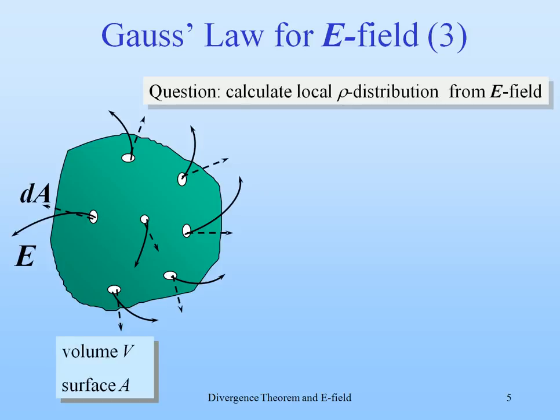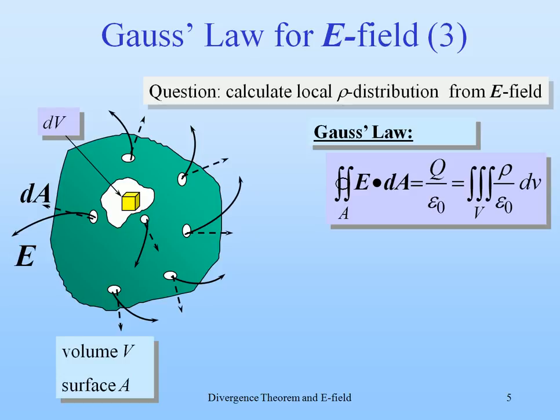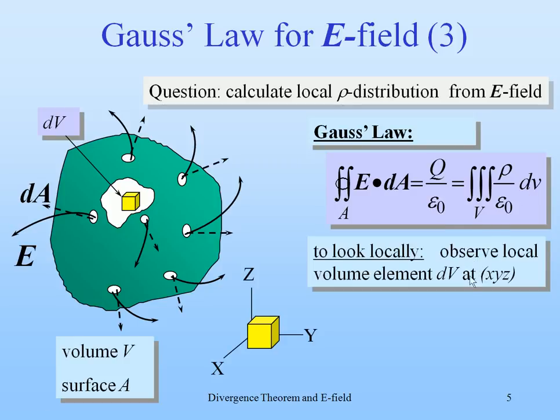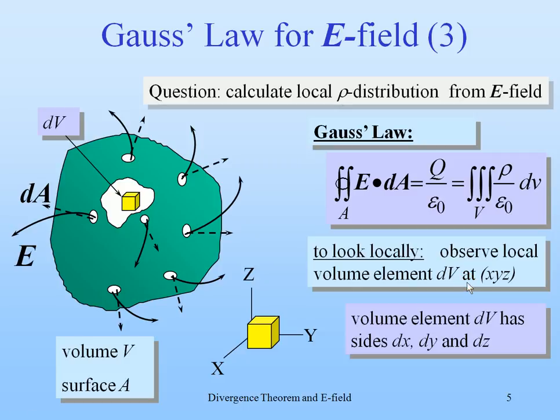Here we have the situation again and inside the volume there is a volume element dV and that dV is present here in this relation. To look locally, let's observe a local volume element dV and the volume element has sides dx, dy and dz.